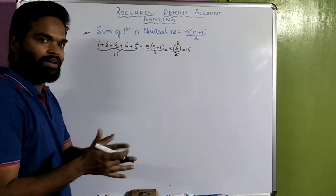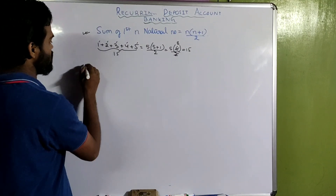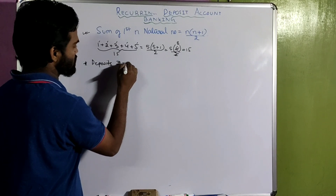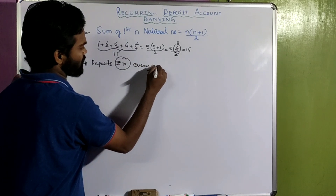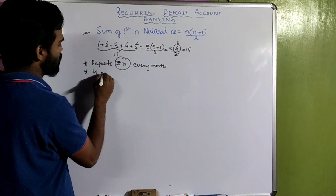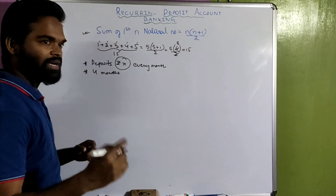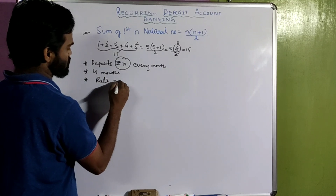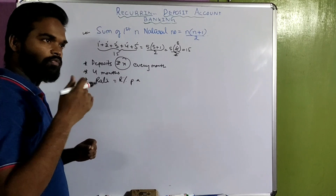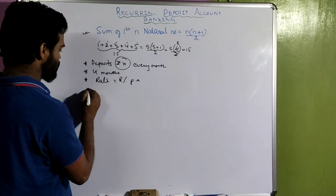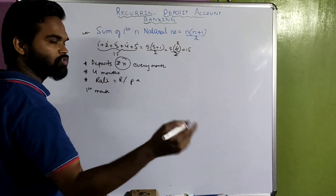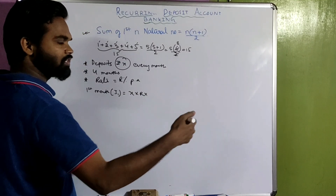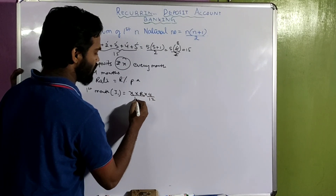Suppose a person deposits rupees x every month for four months, and the rate of interest is r percent per annum. For the first month, he deposits rupees x, so the interest I₁ = x × r × 4/12 × 1/100, because that money stays for four months.